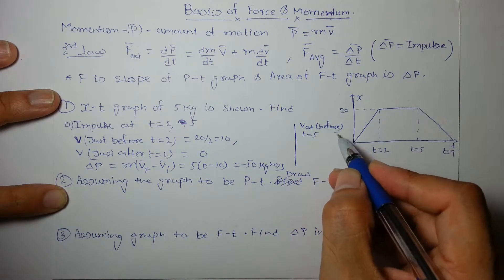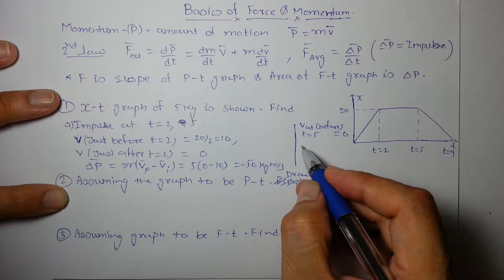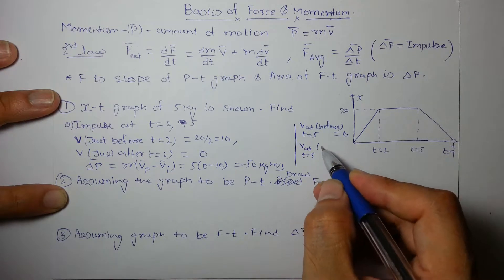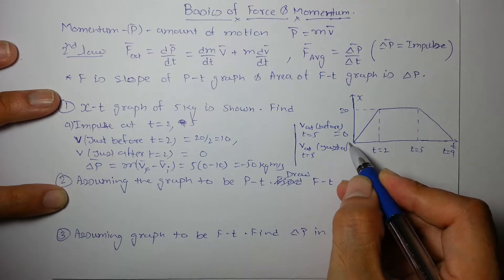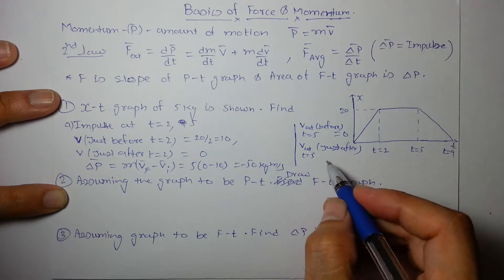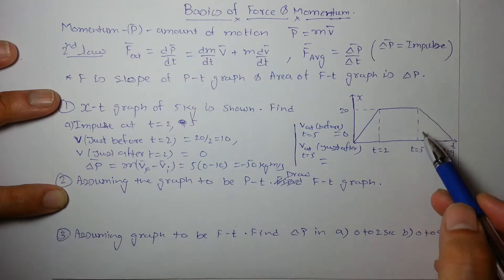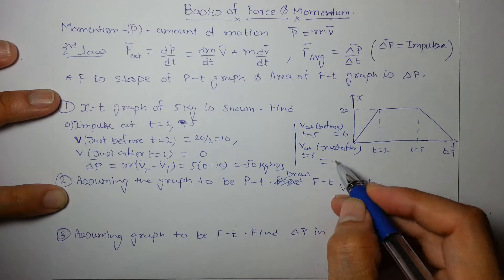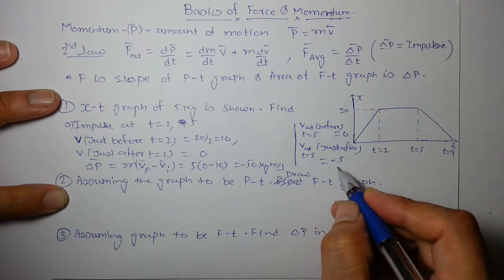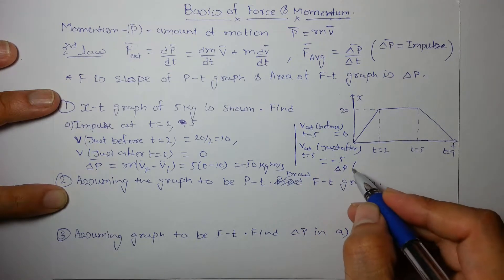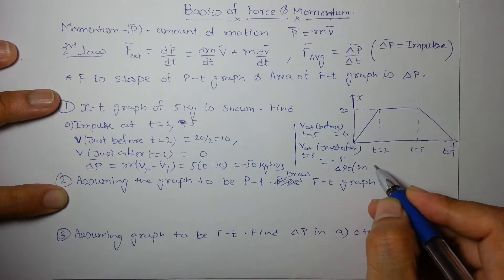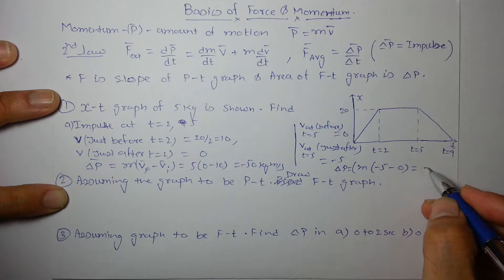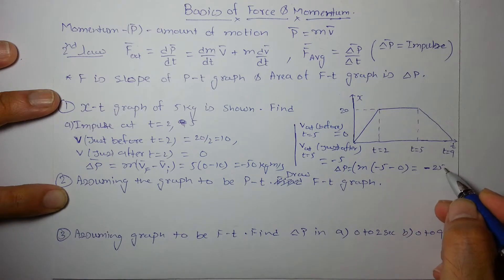Similarly, speed just before t = 5 was 0, and velocity just after t = 5: the slope is −20 over 4 seconds, which is −5. Change in momentum is m(v_final − v_initial) = 5 × (−5 − 0) = −25 kg·m/s.